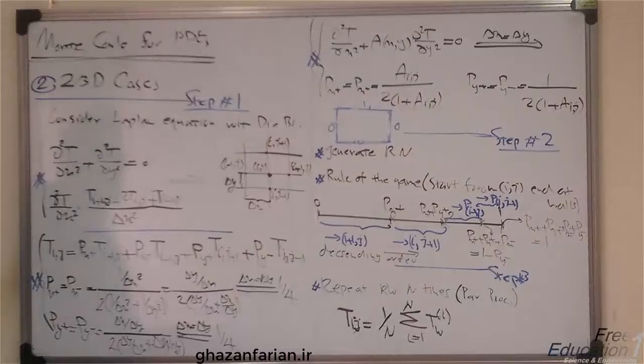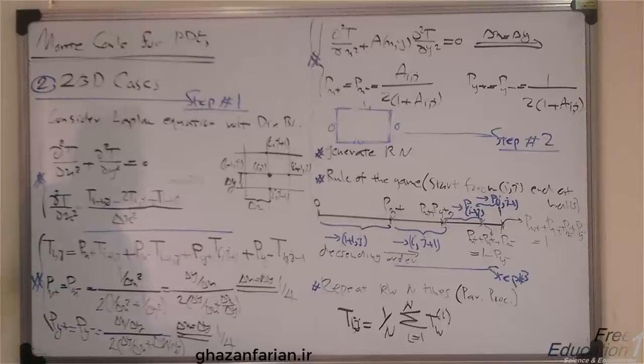Again, as you can verify, all coefficients are positive numbers less than 1, and their sum equals 1, satisfying the fundamental statistical requirements.